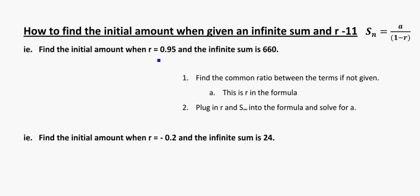In this first example they're saying that my r value is equal to 0.95, so that's less than 1 there. They've given us an infinite sum, so this information tells us the infinite sum is equal to 660. I know my r is equal to 0.95. And my initial amount, remember that's a in the formula, we're trying to figure it out.